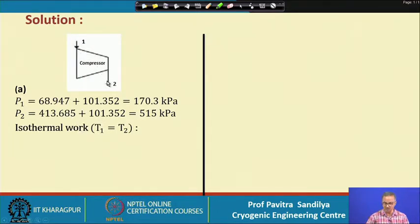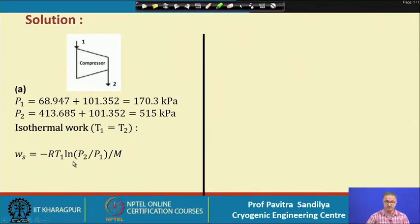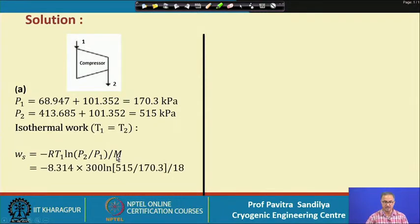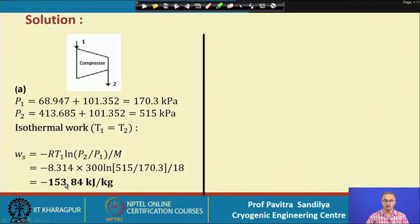Using the isothermal compression formula studied earlier, we obtain the expression for work done. Since the numerator is in terms of moles, we divide by the molecular weight to get work per unit mass. Plugging in all the variable values, we arrive at the isothermal work of compression.